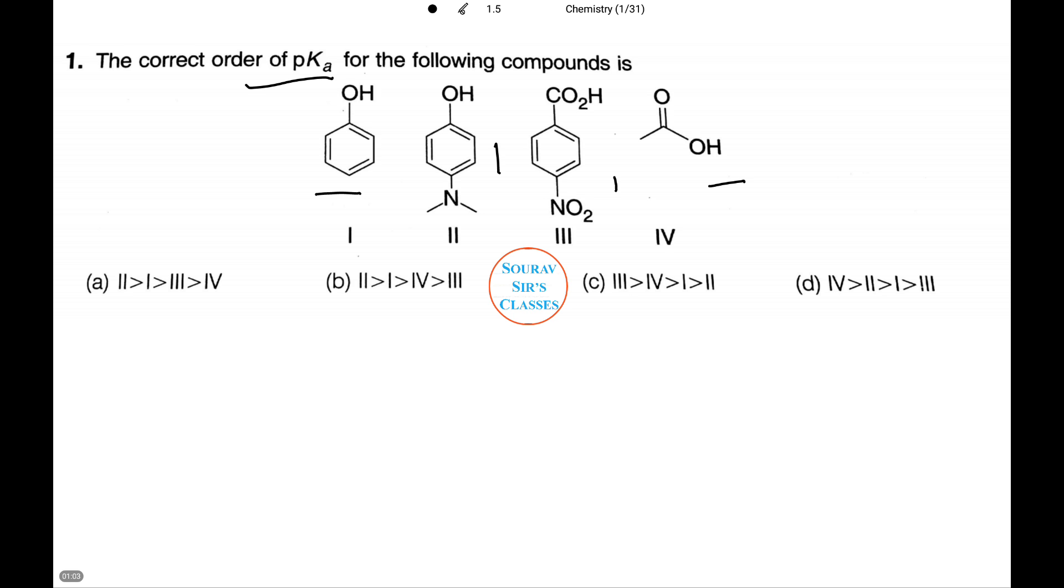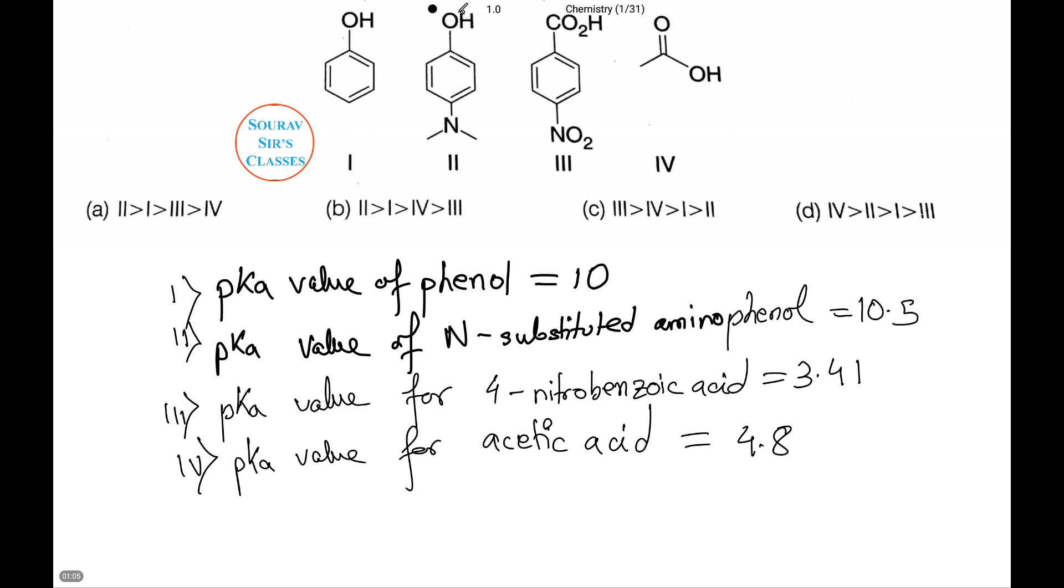Now we have calculated the pKa value of each of the four figures. The first one, phenol, has a pKa value of 10. For the second one, N-substituted aminophenol, it's 10.5.